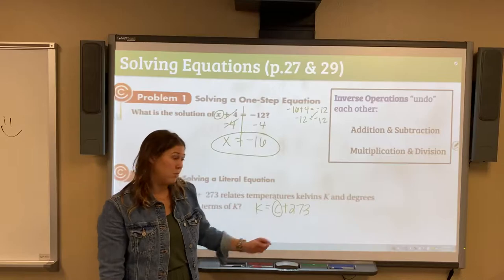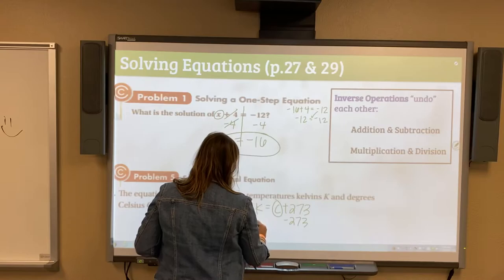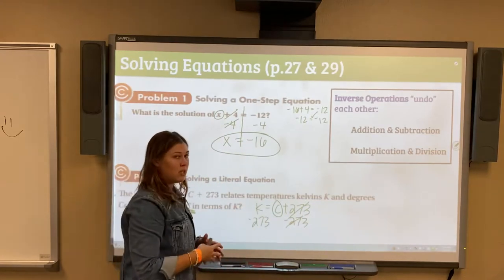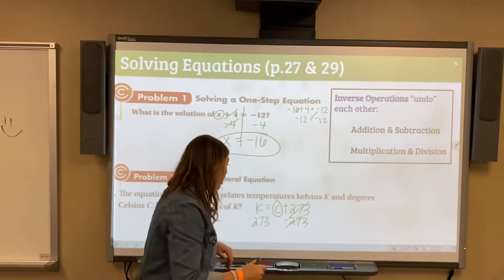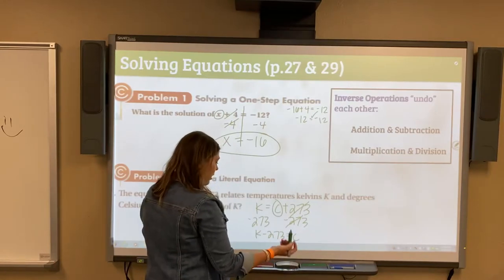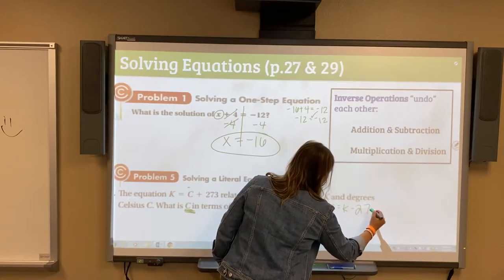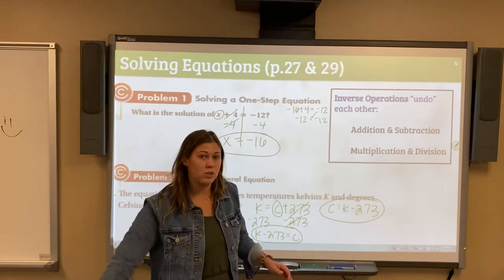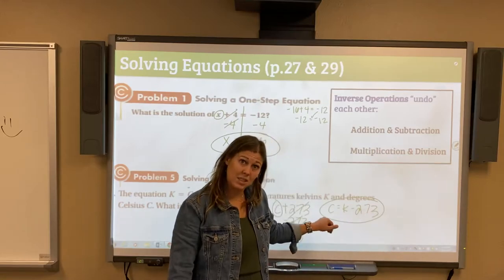If we have K equals C plus 273, we're asking what is C in terms of K. We're going to solve for that variable C. We still need to undo this addition, so we subtract 273 from both sides. K minus 273, we cannot combine those. Those are not like terms. So we'll just say K minus 273 is equal to C, or C equals K minus 273. That's all you have to do. Whenever you're solving literal equations, you're not going to have a pretty answer. But this is your answer.